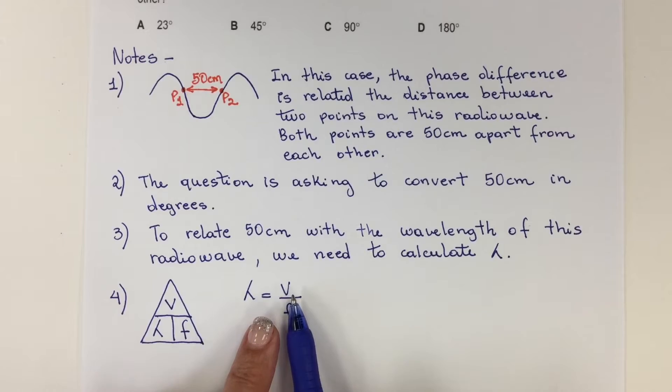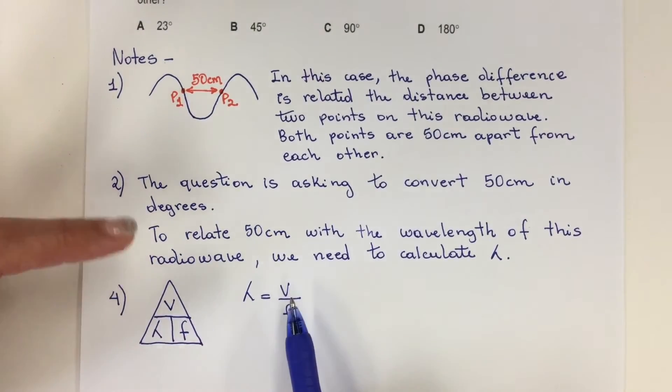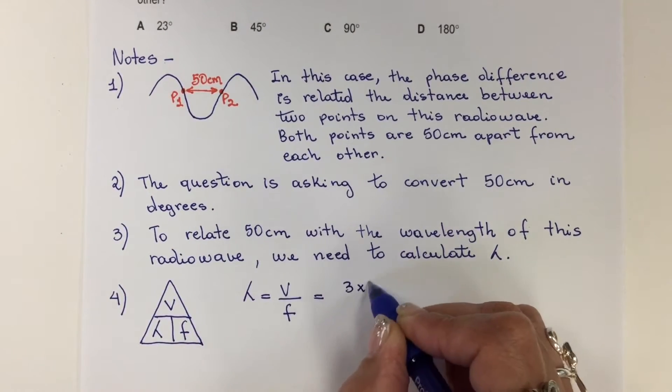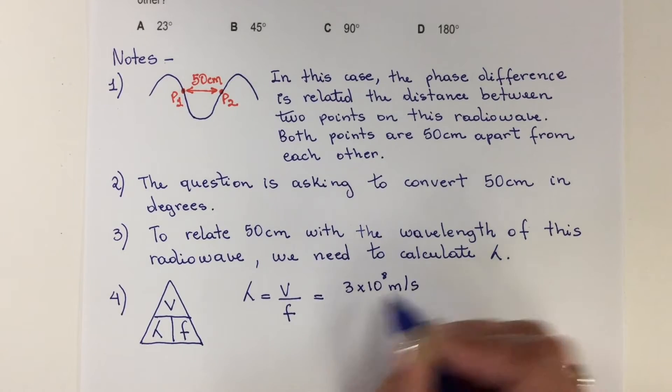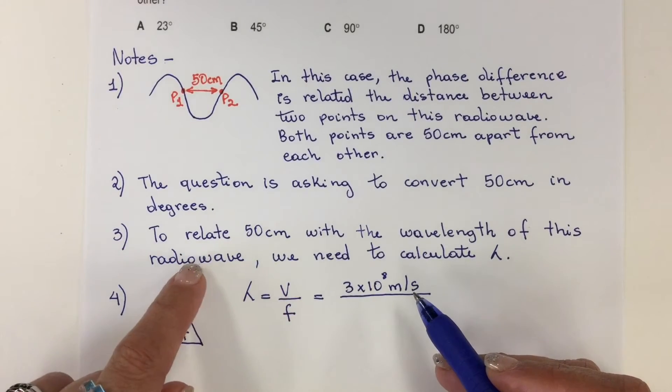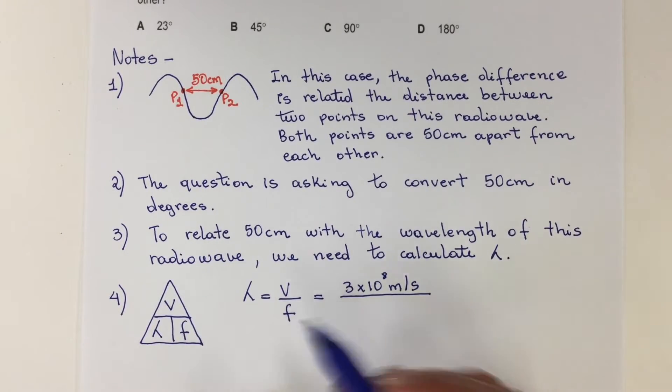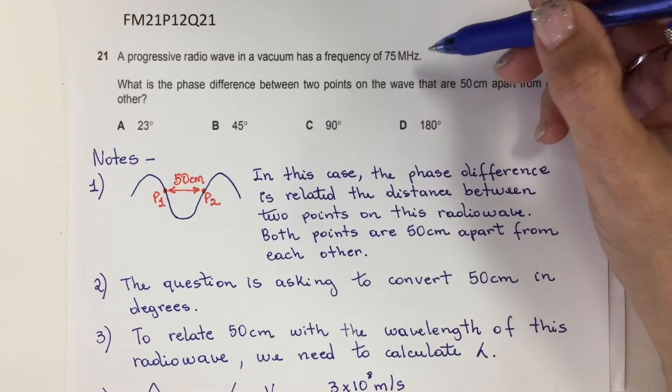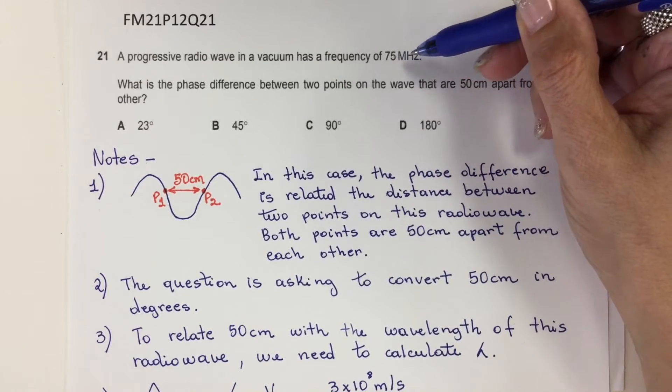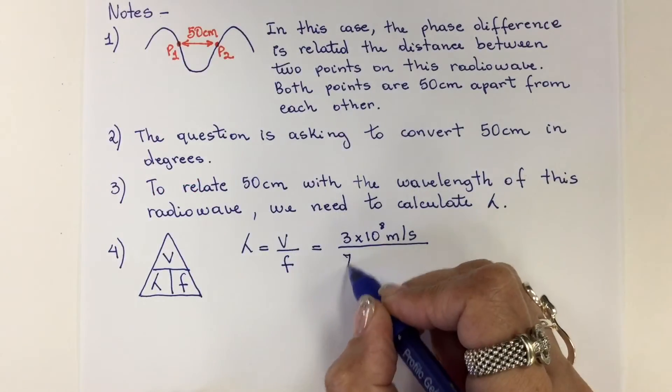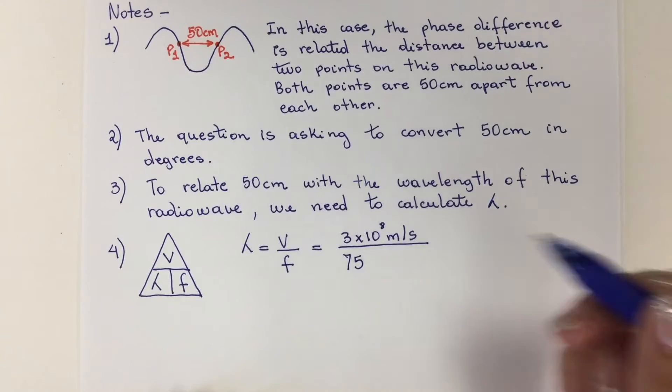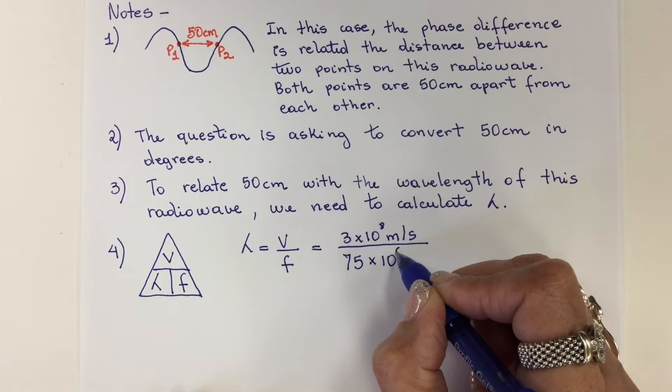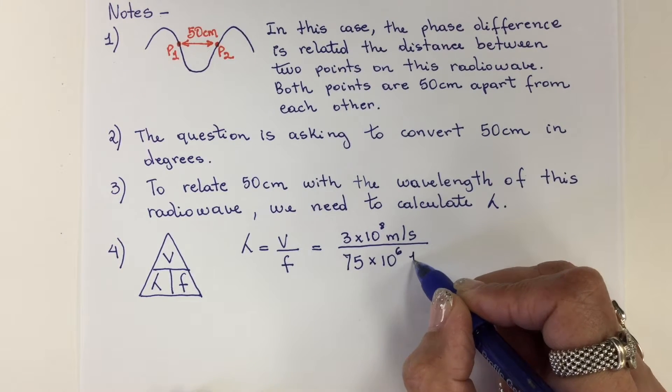The speed of a radio wave is the speed of light. The frequency was given in the heading of the problem: 75 megahertz. Mega is a prefix, so we need to add the multiplier, times 10 to the 6 hertz, which is 1 over second.